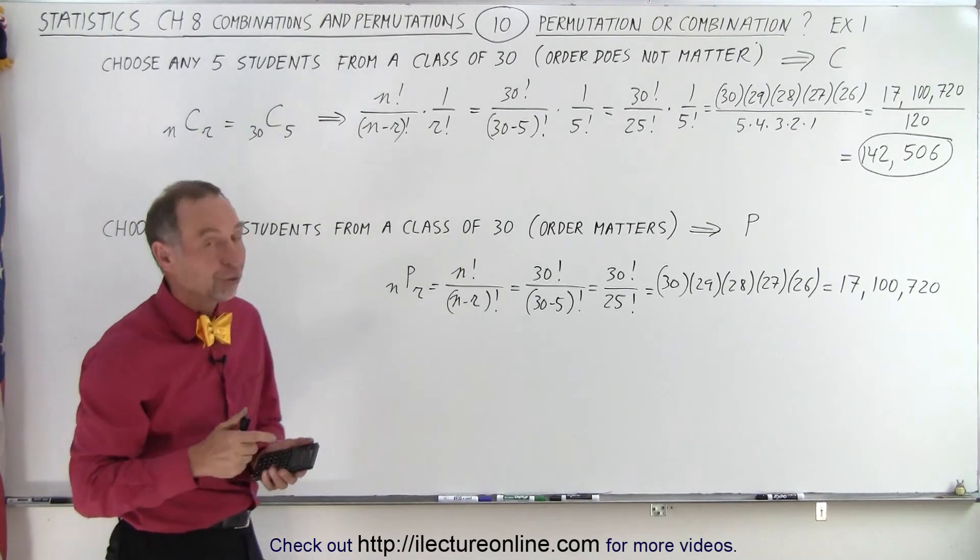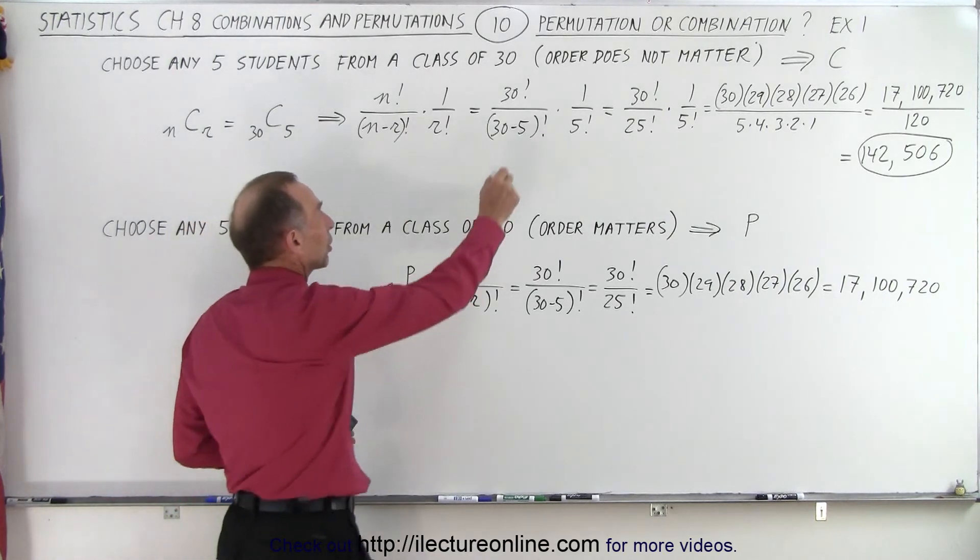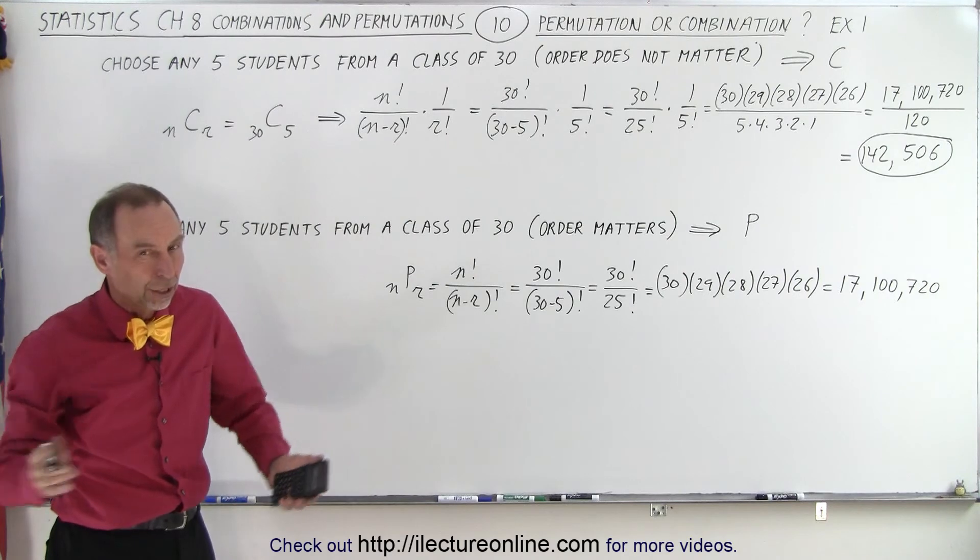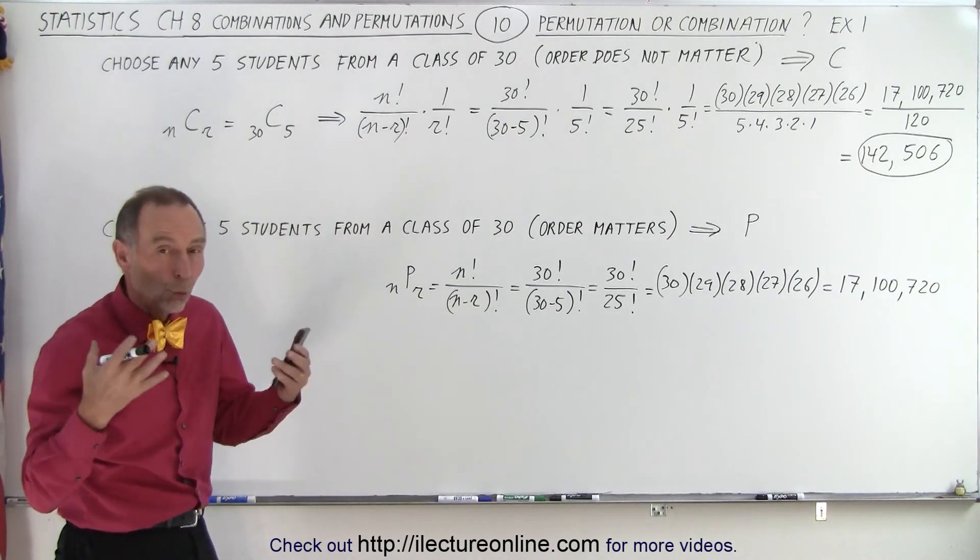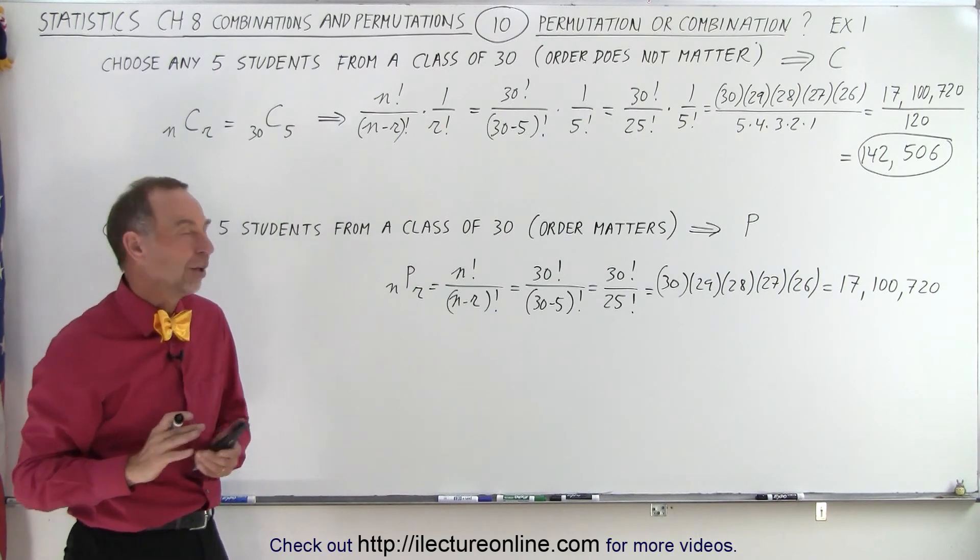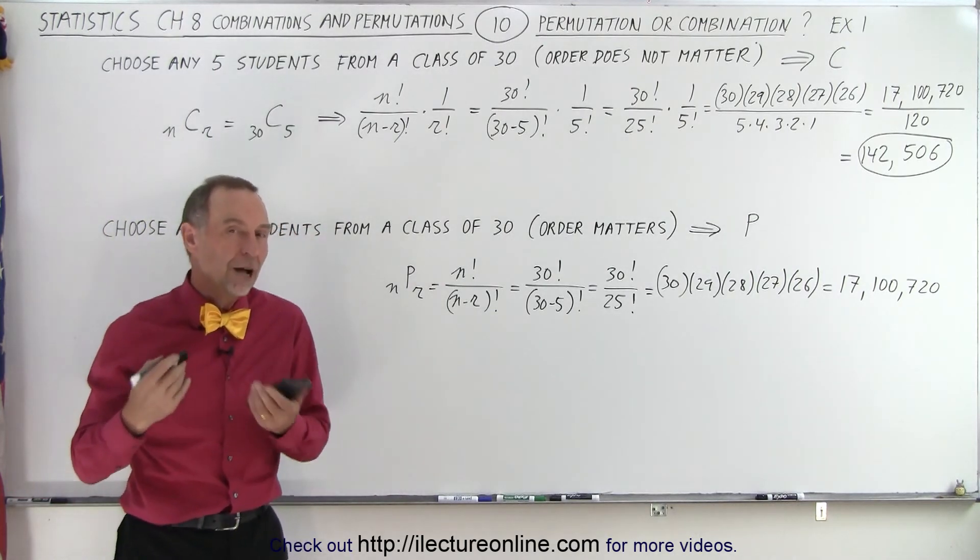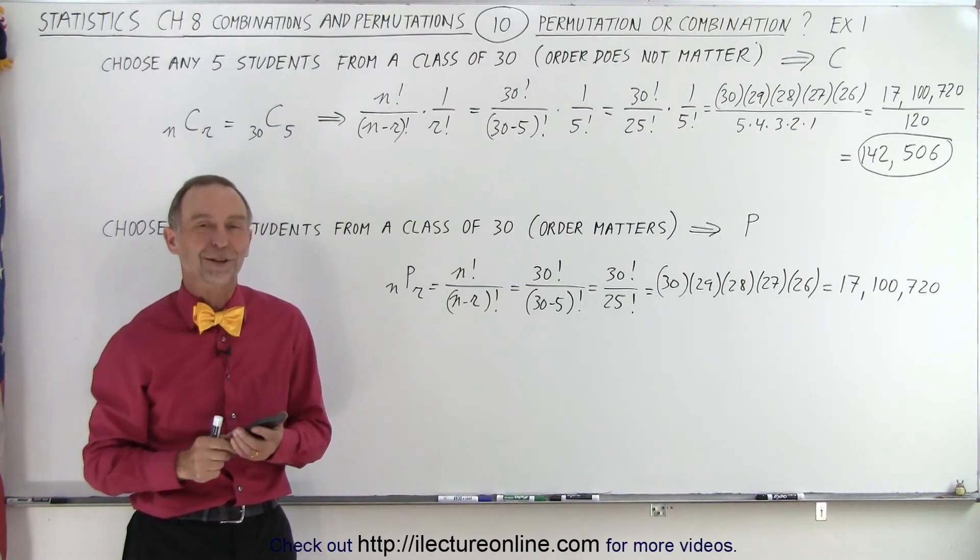But you can again see the difference between the two, and if nothing was specified, I would go for combinations, because typically when you pull 5 people out of a group, you don't care how the 5 people are picked, what the order is, you simply care about which 5 you end up with at the end, so I would lean towards this being a problem where we're looking for the number of combinations rather than the number of permutations, and that is how it's done.